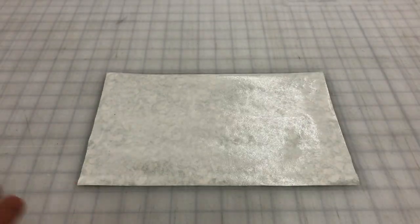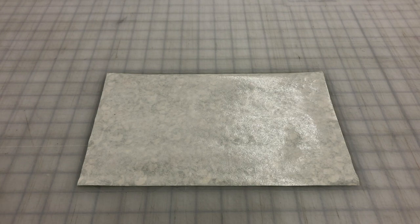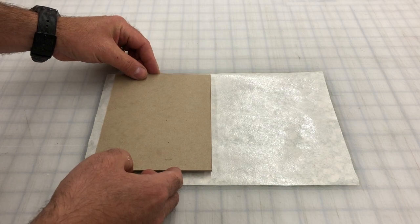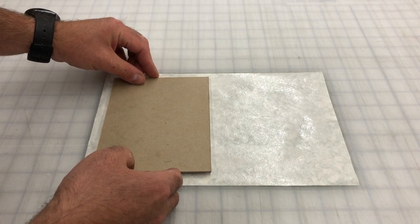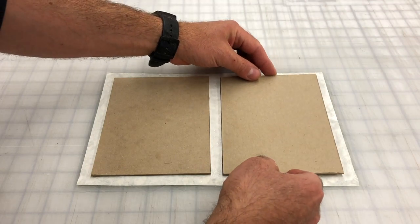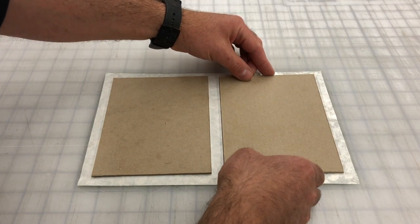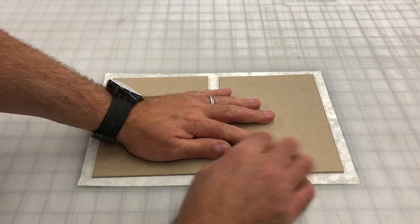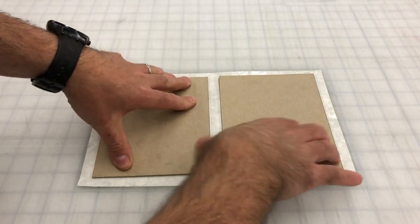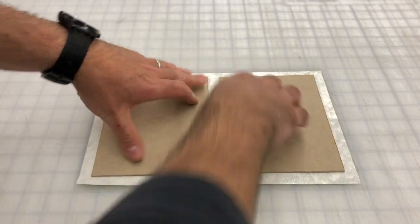Next I have some book board. Book board is just thick cardboard. All sorts of cardboards and matte boards will work here. This happens to be marketed as a book board. And you can't see it on the screen but I have very small marks to indicate where I need to place my board down. Now you can be as fussy and as careful in this process as you want to be.